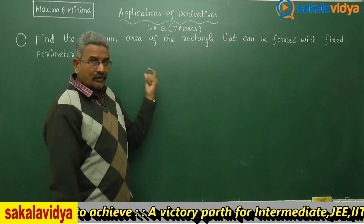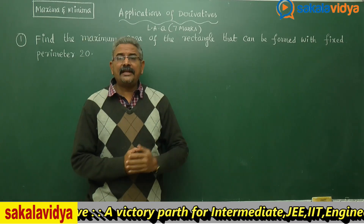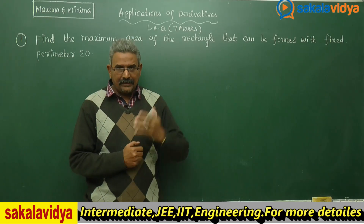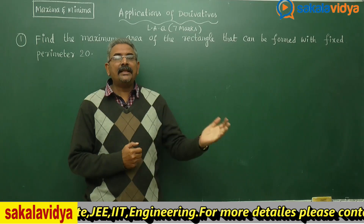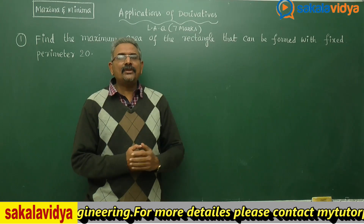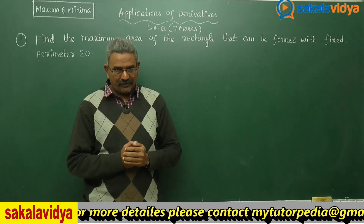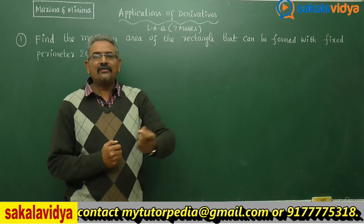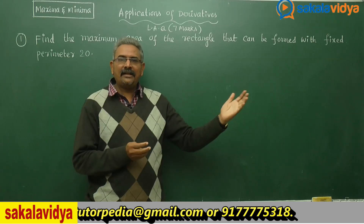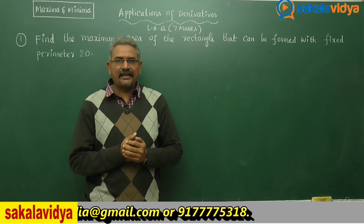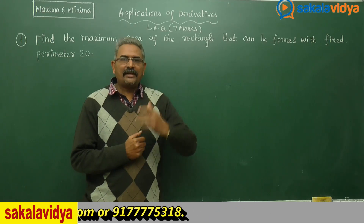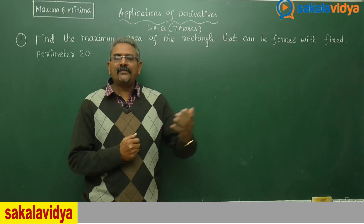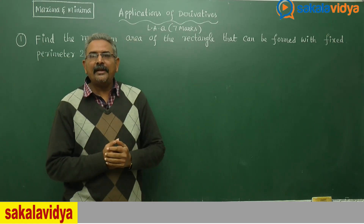Now in this problem, we need to maximize the area. The area of the rectangle is evaluated using length times breadth, that is x times y. Since the area is in two variables, we need to change it to one variable. With the help of y = 10 - x, we replace y, getting a quadratic polynomial in x, which should be maximized using differentiation — that is the application of derivatives.